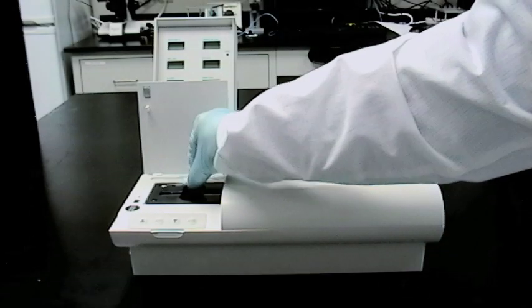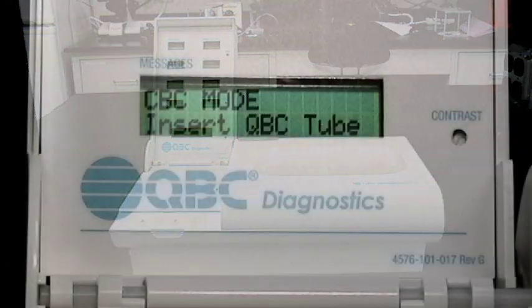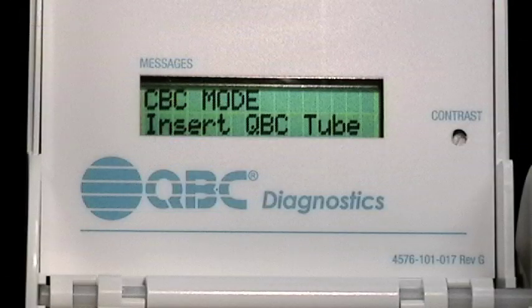Once the centrifugation is complete, place your tube in the QVC AutoRead Plus, making sure that the AutoRead Plus is in CBC mode, not control mode.